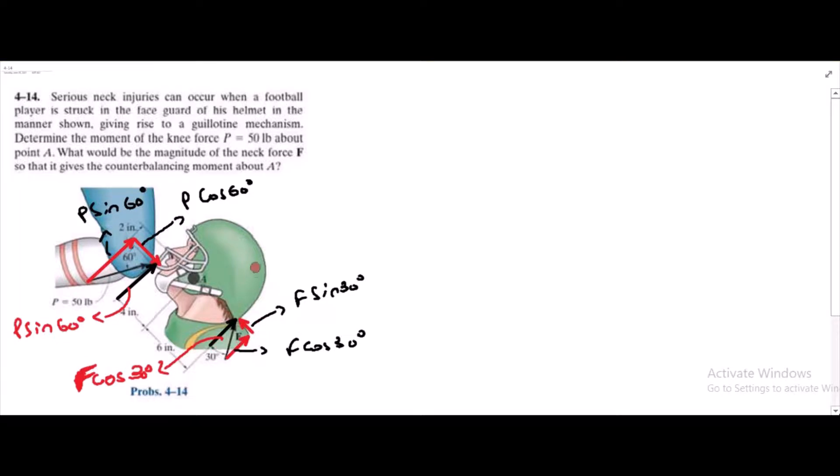Now we have to sum up the moments about point A and it is counterbalancing moment. So the sum of the moments about point A by all these forces is 0. So if we look at the figure for force P, the horizontal component which is P sin 60.